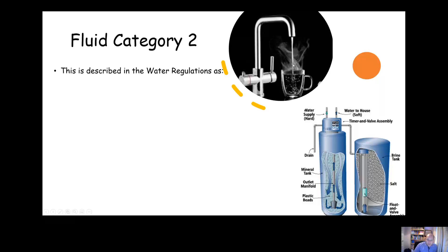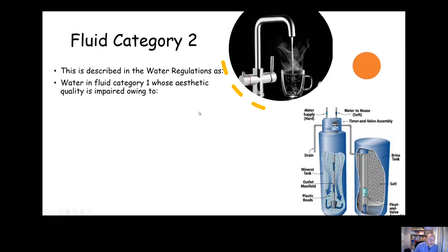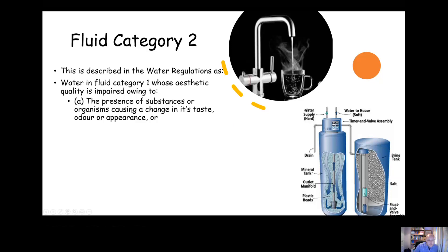Fluid category two is water which has had a slight change — described in the regulations as an aesthetic change. It might be something that's caused a change in taste or appearance. For example, if you got a cup of water from the mains and put a little bit of juice in it, you'd have changed it from the way it came in from the mains. It's still fine to drink, but its aesthetic quality — colour, taste, smell — has changed. Fluid category two isn't really a risk to health, but because it's changed from mains water you must put backflow prevention in place.